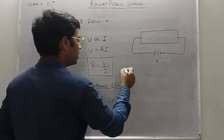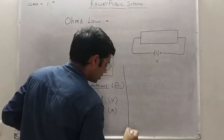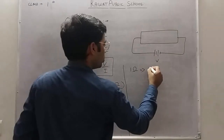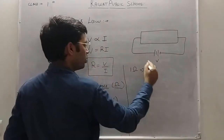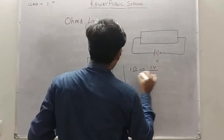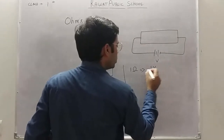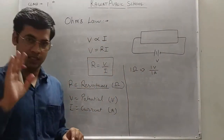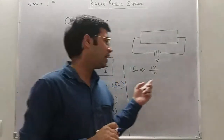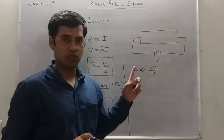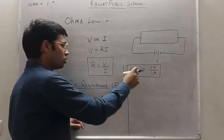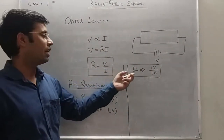Now the unit of resistance is Ohm. We define one Ohm as follows: if we apply a potential of one volt and during that condition one ampere of current flows, that is known as one Ohm resistance. So we can easily define one Ohm with the help of the formula R = V/I.